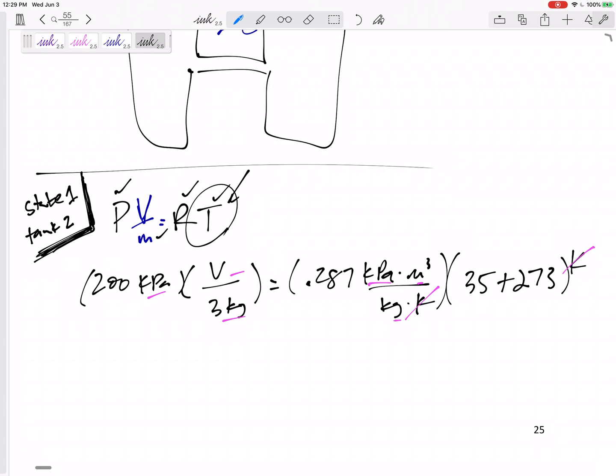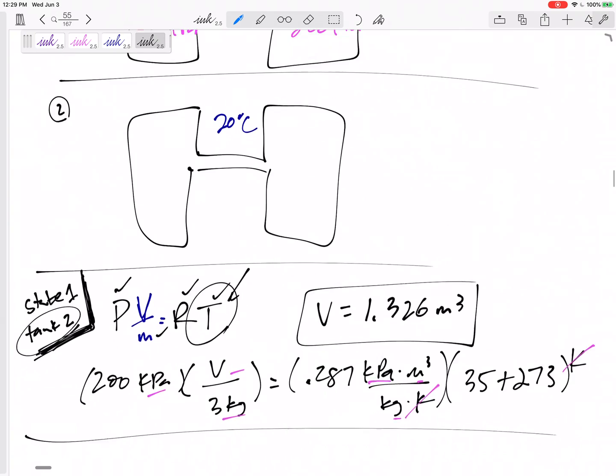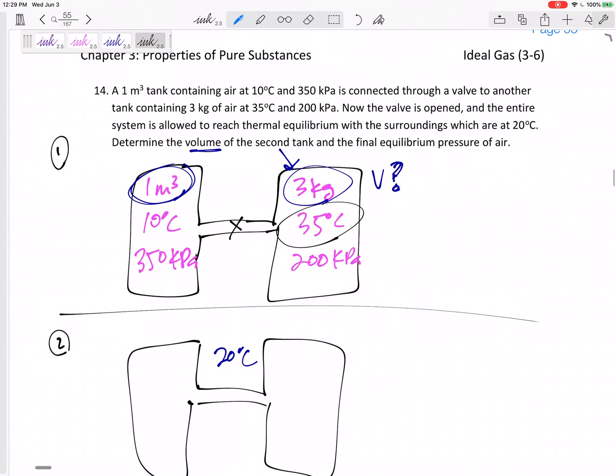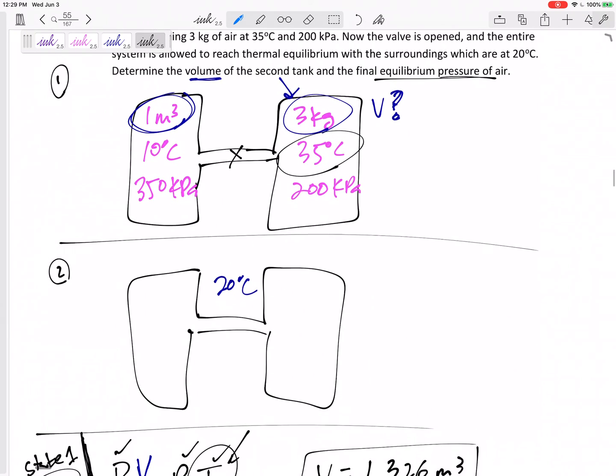Yeah, so I can just solve for the volume. I can solve for the volume right here. I'll get the volume of tank two, 1.326 m³. All right, so that was one thing that it asked for. What's the final equilibrium pressure of the air?